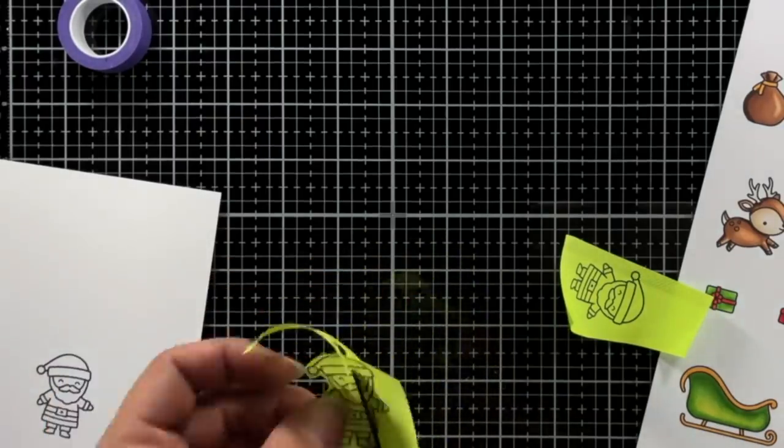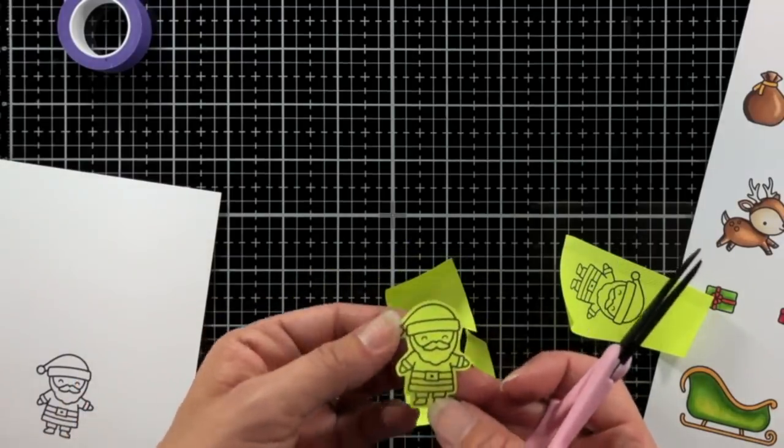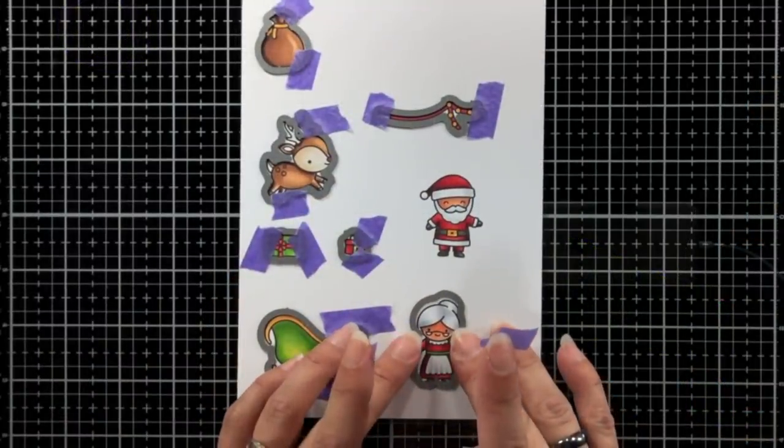I'm going to leave an edge around my Santa. This is going to make it look like I die cut him out, so it'll match the rest of my images on my card.